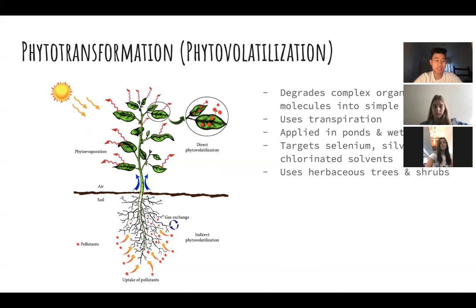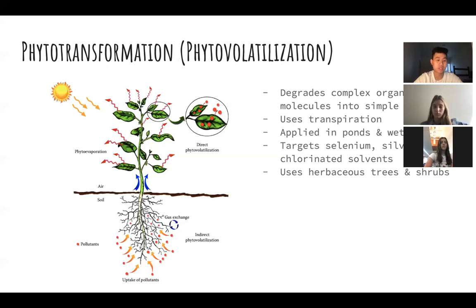This method is especially effective in removing contaminants in shallow waters, so phytotransformation is mainly used in places such as ponds or wetlands. Some toxic chemicals that are removed by this method include selenium, silver, and chlorinated compounds. Some specific plant species used include herbaceous plants, trees, and shrubs.